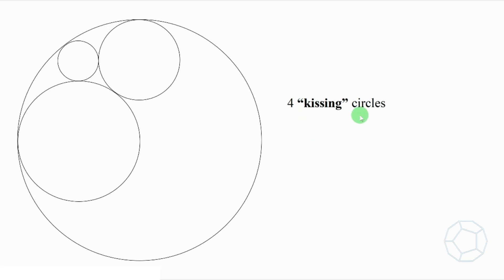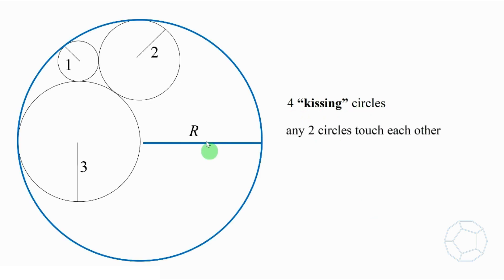What I mean by kissing is that any two circles intersect each other at only one point. The radii of the three smaller circles are 1cm, 2cm, and 3cm respectively. We're gonna find the radius of the largest circle, which is R cm.